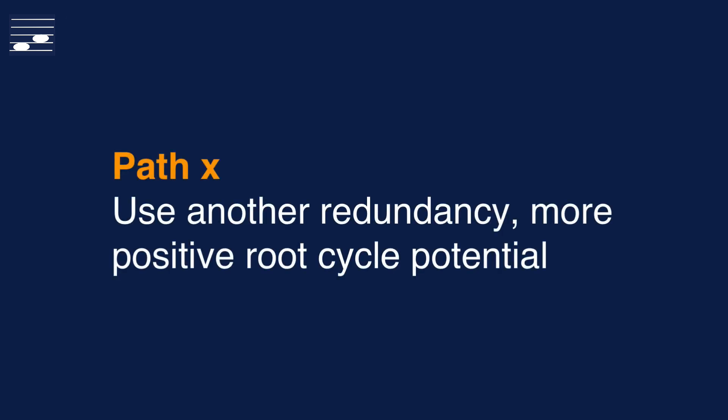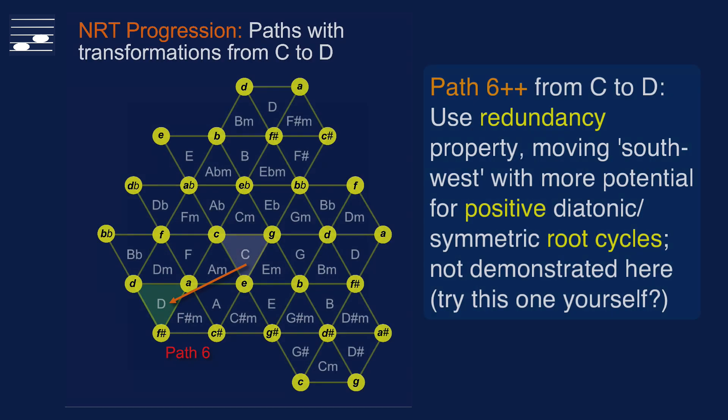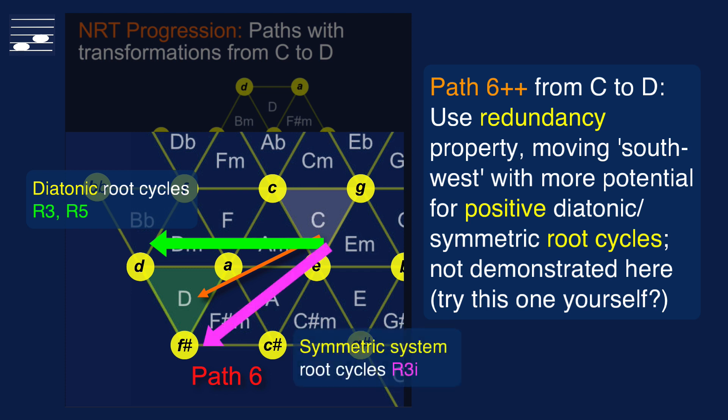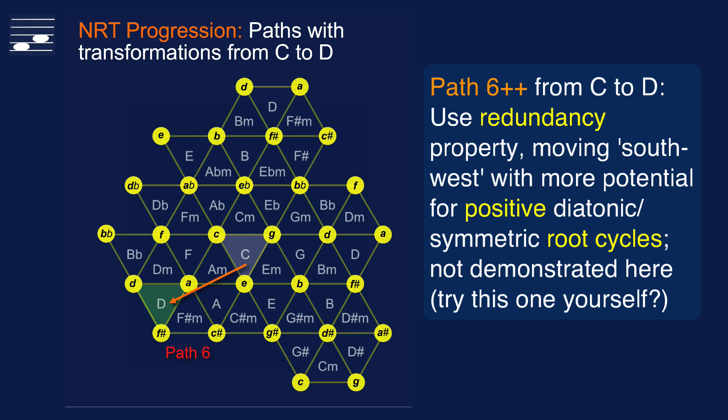The triad Tornetz leaves room for creativity. One option is to look at the further redundancy in the diagram. Here I show an option for path number 6, that takes the triad D major in the lower left corner as the target chord. The overall direction of chord movement is south-west, and that gives us the opportunity to design a chord progression with either more positive diatonic root cycles as we move west in the subdominant direction, or more positive symmetric system cycles with roots descending by three semitones in the diagonal direction. I leave the design of such a path as an exercise for your imagination.